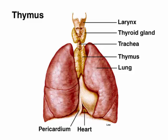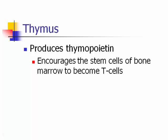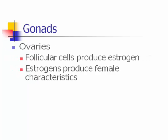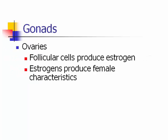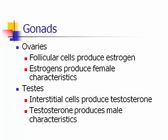The thymus, which is much larger in children than adults, makes a hormone called thymopoietin, which encourages bone marrow stem cells to become T cells. T cells are famous in the context of HIV, which attacks helper T cells. Finally, the gonads: the ovaries produce estrogens (from follicular cells), promoting female characteristics; the testes produce testosterone (from interstitial cells), promoting male characteristics.